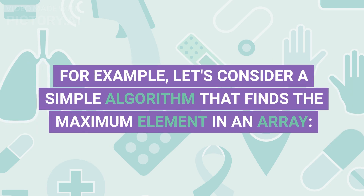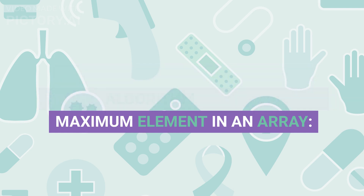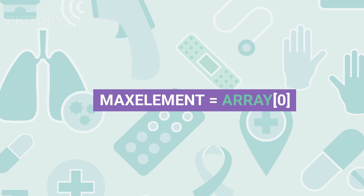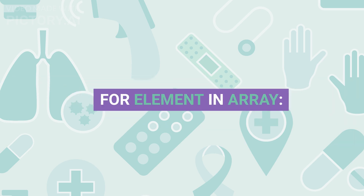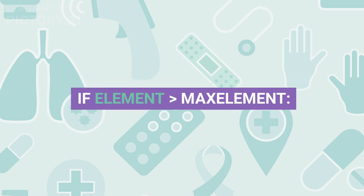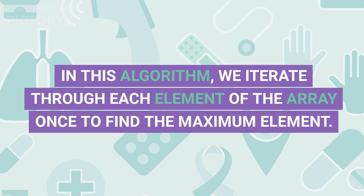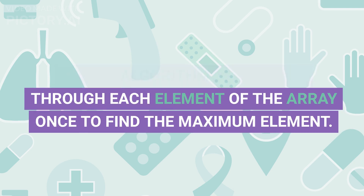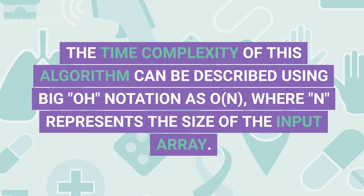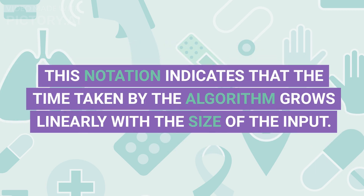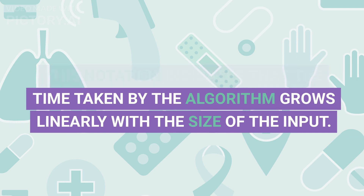For example, consider a simple algorithm that finds the maximum element in an array. The function iterates through each element of the array once: it initializes max_element to array[0], then for each element in the array, if the element is greater than max_element, it updates max_element, and finally returns max_element. In this algorithm, we iterate through each element of the array once. The time complexity can be described as O(N), where N represents the size of the input array. This notation indicates that the time taken by the algorithm grows linearly with the size of the input.